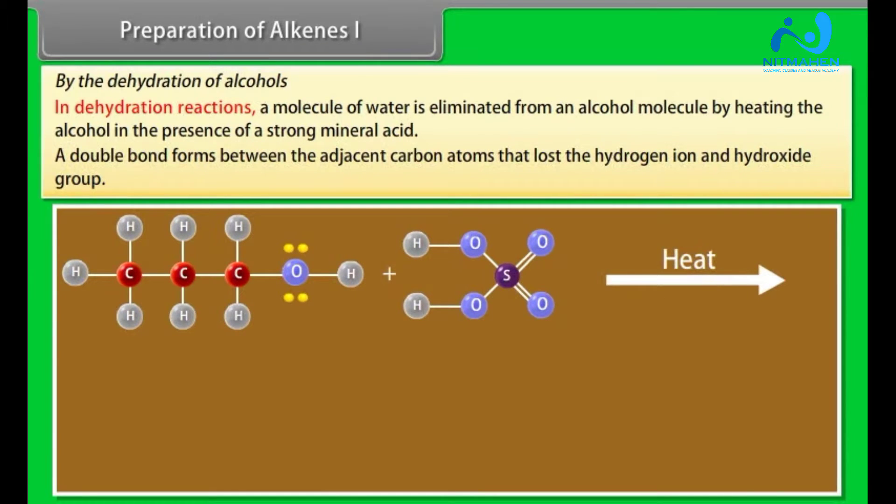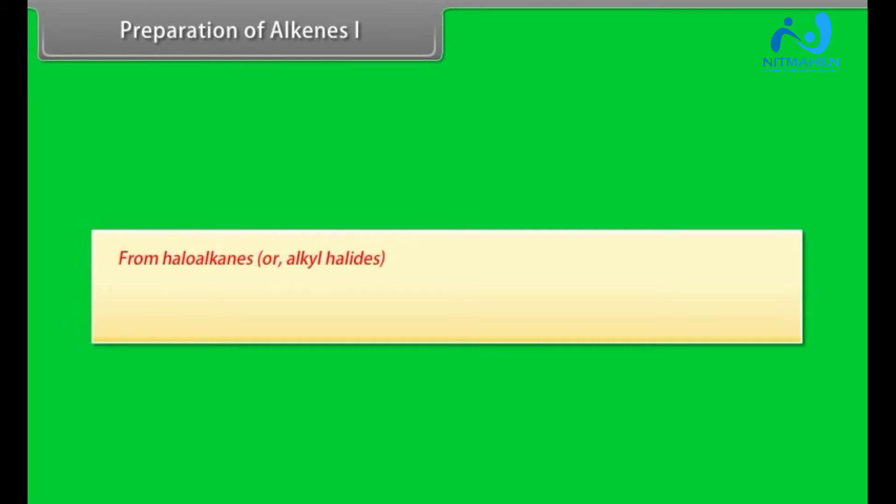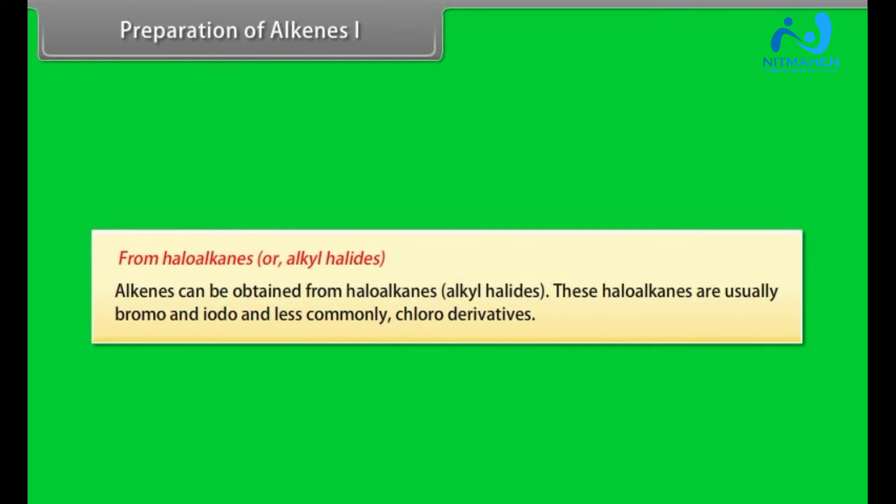A double bond forms between the adjacent carbon atoms that lost the hydrogen ion and hydroxide group. From haloalkanes or alkyl halides. Alkenes can be obtained from haloalkanes, alkyl halides. These haloalkanes are usually bromo and iodo and less commonly chloro-derivatives.